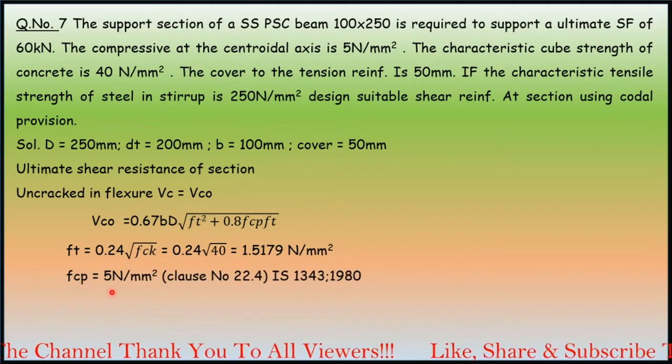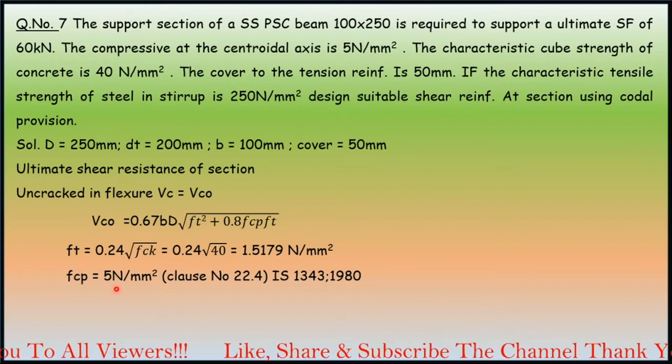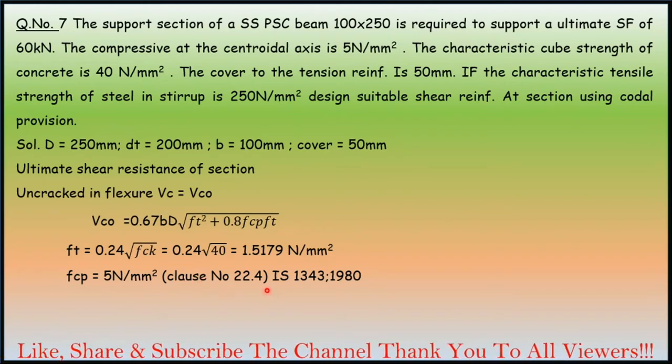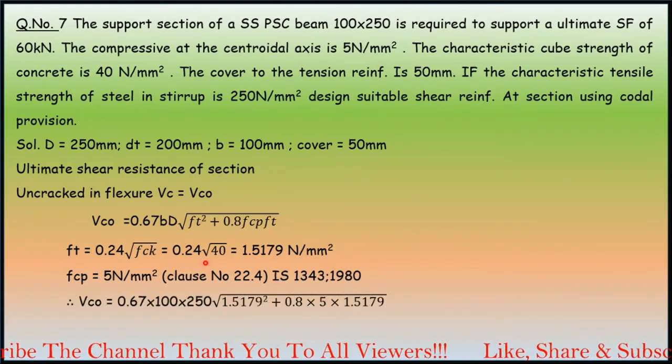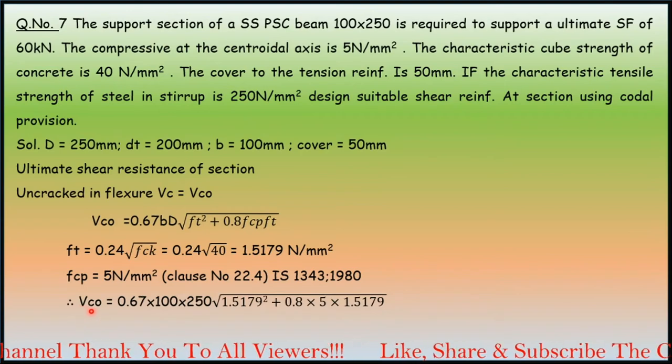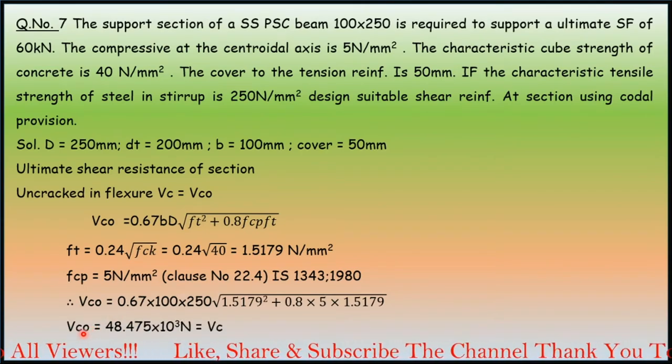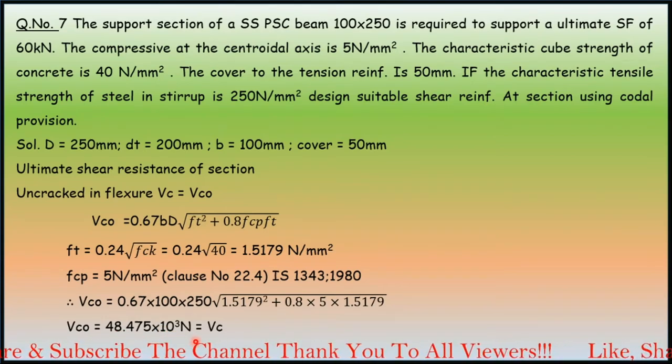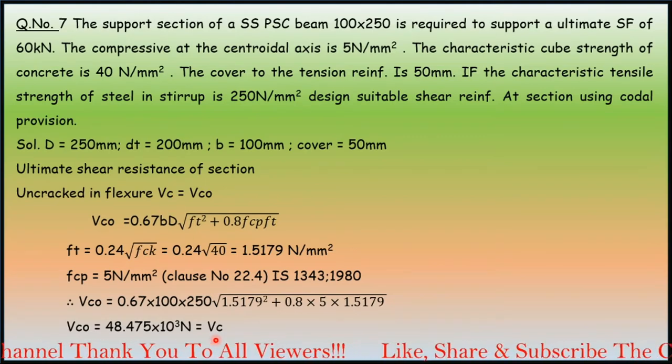fcp is the compressive stress at the centroid, which is 5 N/mm². As per clause number 22.4, IS 1343 1980, substituting all the things into the formula, we are able to see that Vco equals 48.475 × 10³ N, which is uncracked flexure, which is Vc we have to consider.